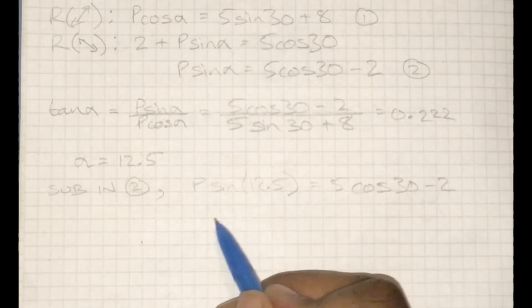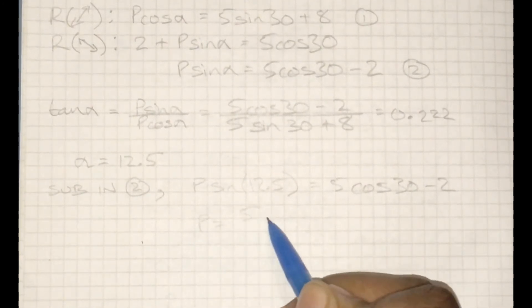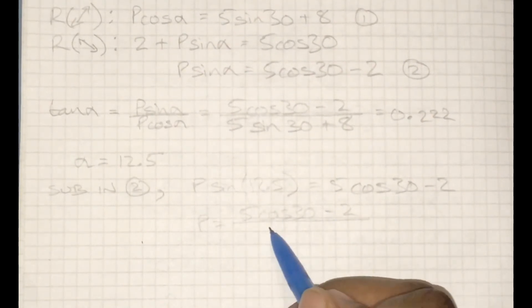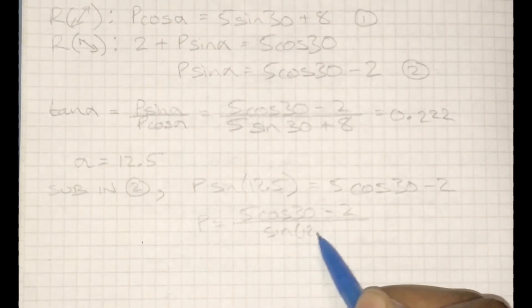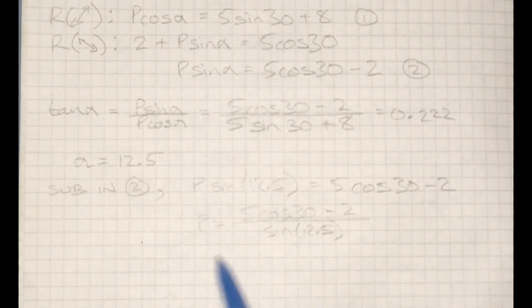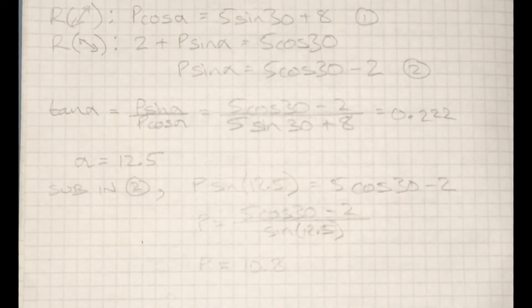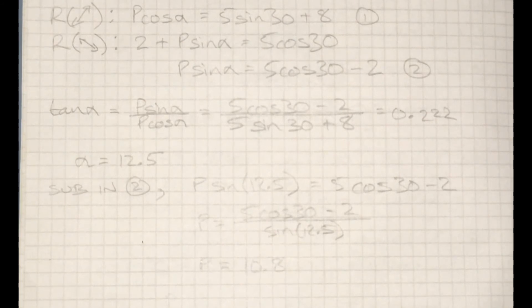A little bit of division, and we get a value for P. And from here, we get that P equals 10.8. So that's 10.8 Newtons for that unknown force.